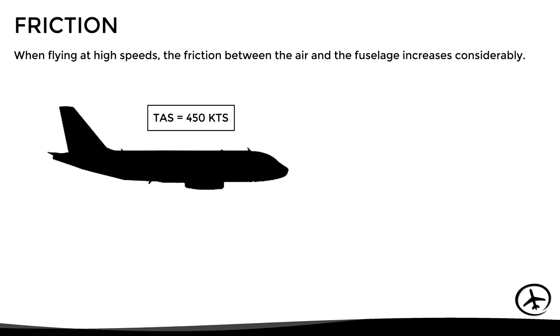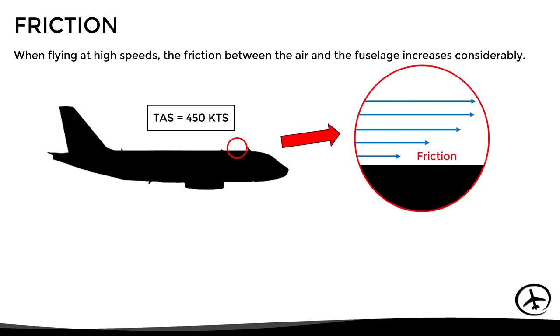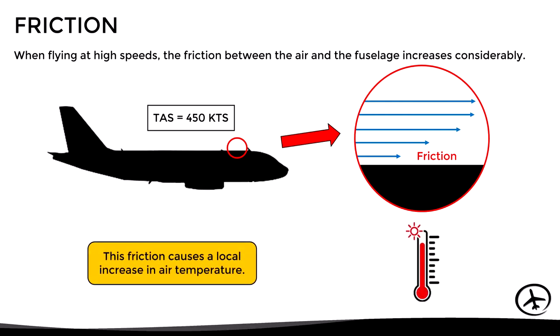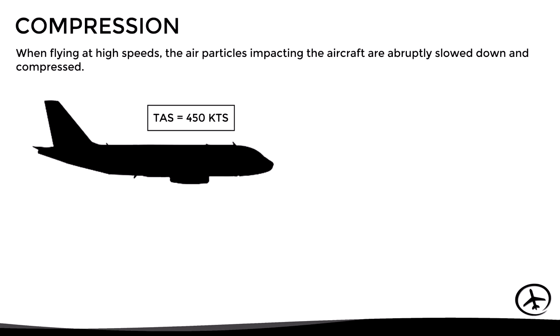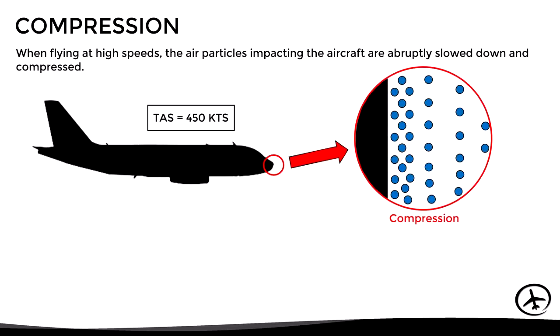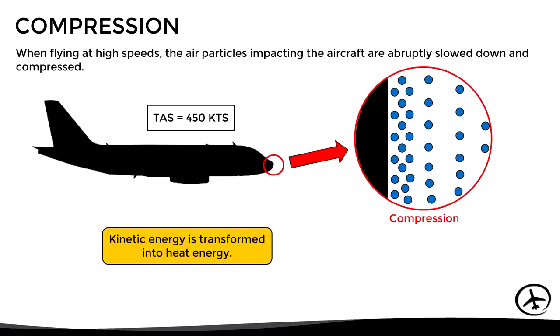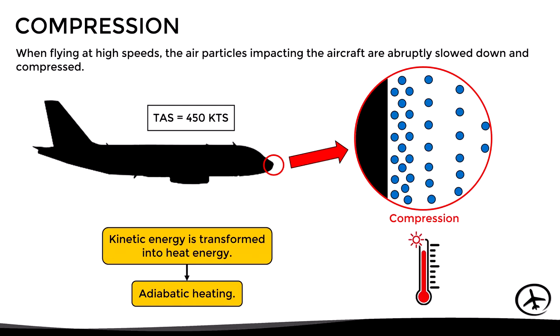The first effect is friction: when flying at high speeds, the friction between the air and the fuselage increases considerably, causing a local increase in air temperature. The other effect is compression: at high speeds, air particles impacting the aircraft are abruptly slowed down and compressed. In this case, kinetic energy is transformed into heat energy through a process known as adiabatic heating, which also causes a local increase in air temperature.